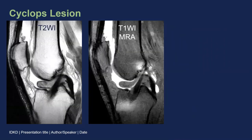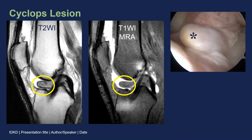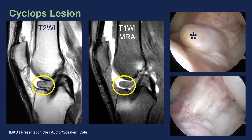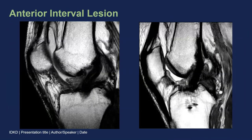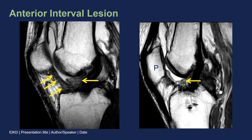Another complication to look for on T2-weighted sagittal images is a cyclops lesion — a focal synovial-based mass of arthrofibrosis anterior to the graft. It can result in limited extension, and you can see at arthroscopy why it's called a cyclops lesion: there's this eye-type structure staring at the arthroscopist, and once debrided, you can see the normal ACL fibers behind it. Arthrofibrosis can also extend into Hoffa's fat pad, called an anterior interval lesion. Both patients shown have small cyclops lesions, but also a very low signal intensity band of fibrotic tissue along the posterior aspect of Hoffa's fat pad extending to the patella. In the patient on the right, the patella is actually retracted inferiorly — patella baja — which can be another cause of limited extension and requires debridement.